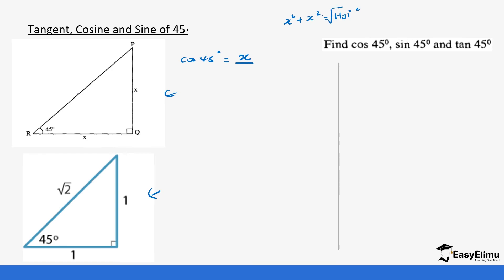So to get the hypotenuse, we will do the square root of both sides. The square root of x squared plus x squared is the same as the square root of 2x squared. So cos of 45 is going to be x over the square root of 2x squared.